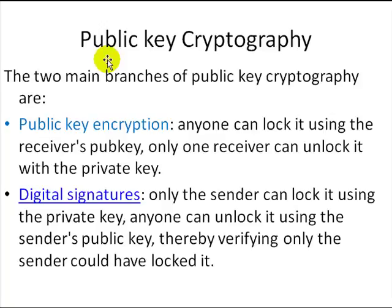Let's look at public key encryption in detail. The most common use is encryption where you have a key pair. Everybody makes a key pair, publishes the public key, and keeps the private key secret. If you want to send something private to somebody, you take their public key, lock the data, and mail it. Everyone can see the public key but cannot compute the private key because only one person has it and it is hidden. The person with the private key can unlock the data and read it.